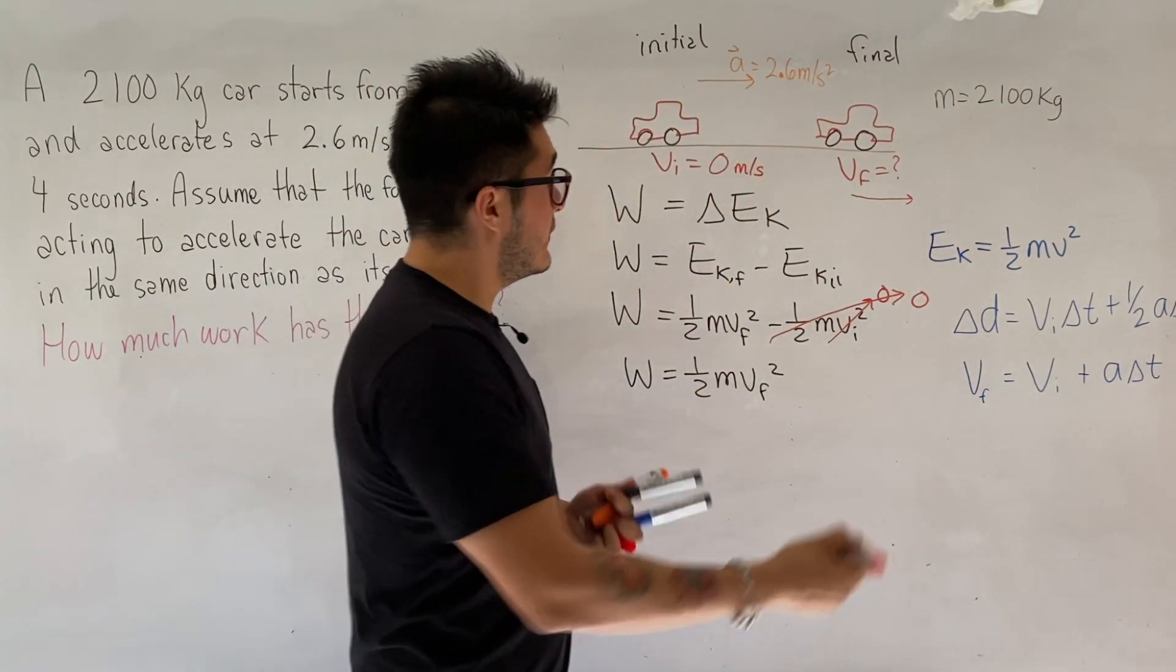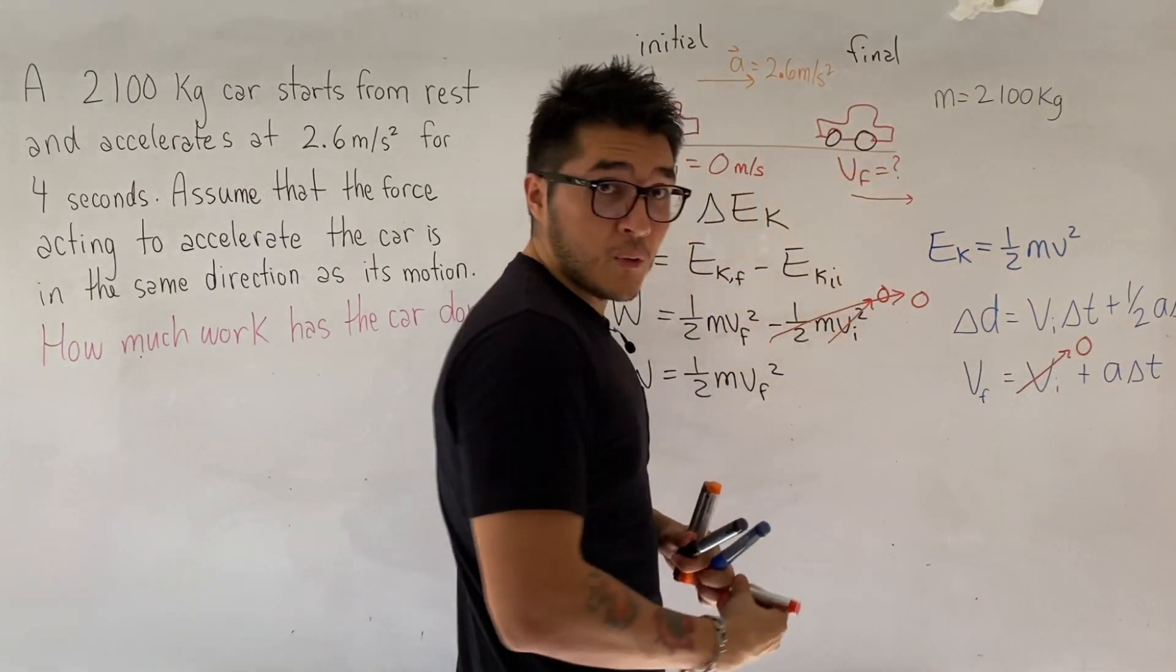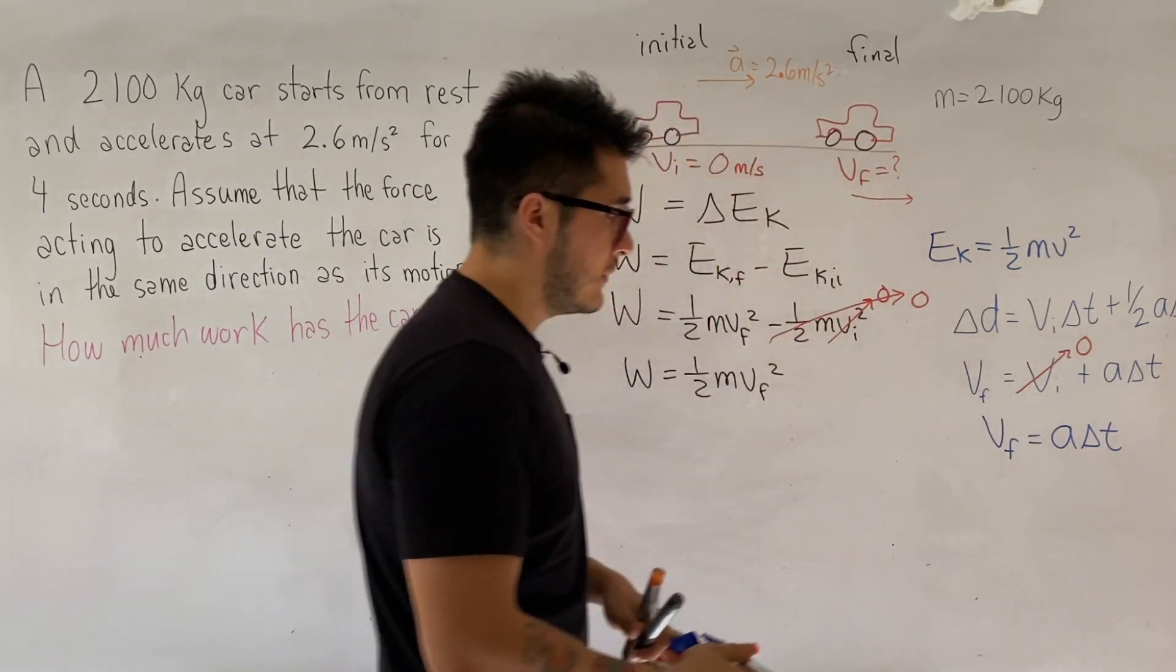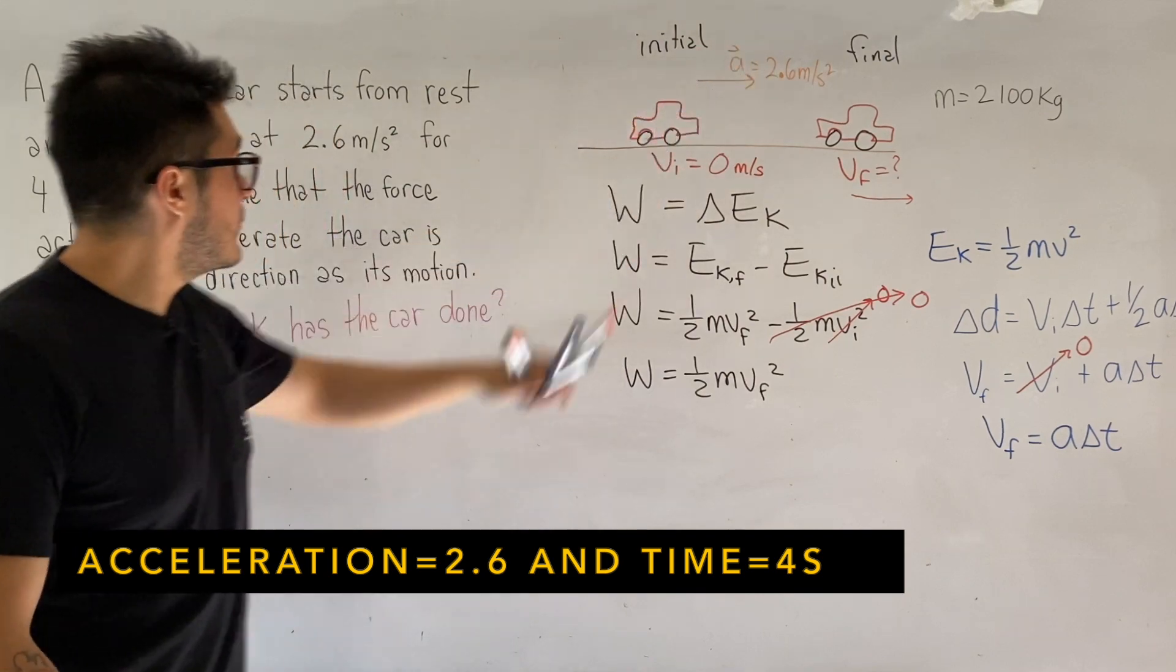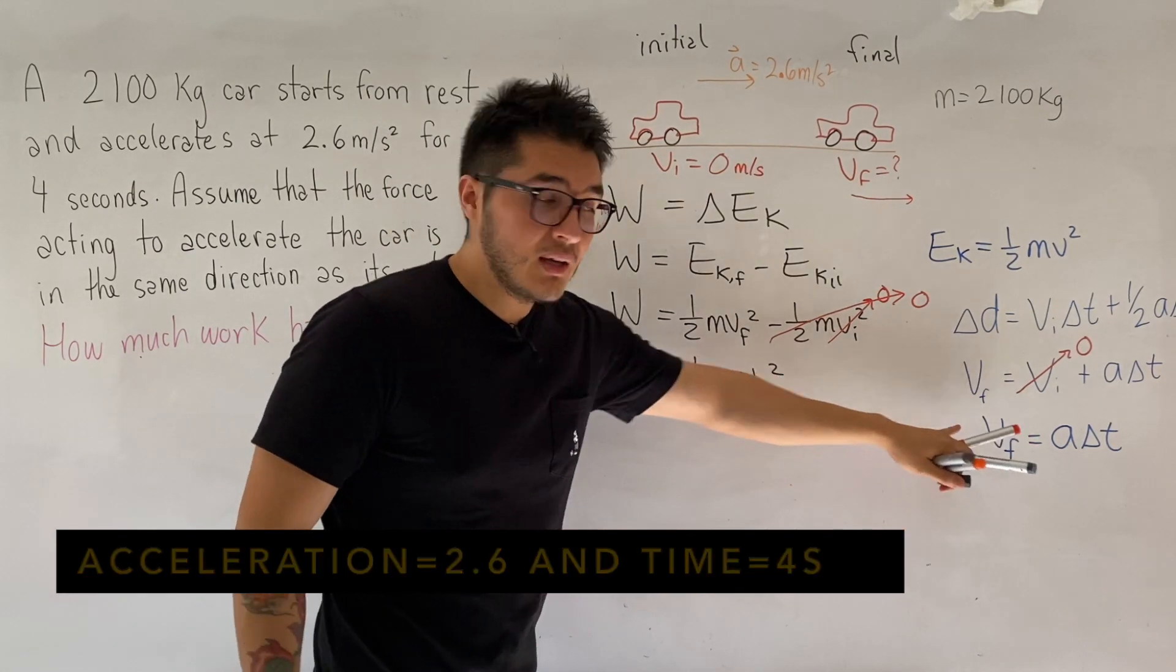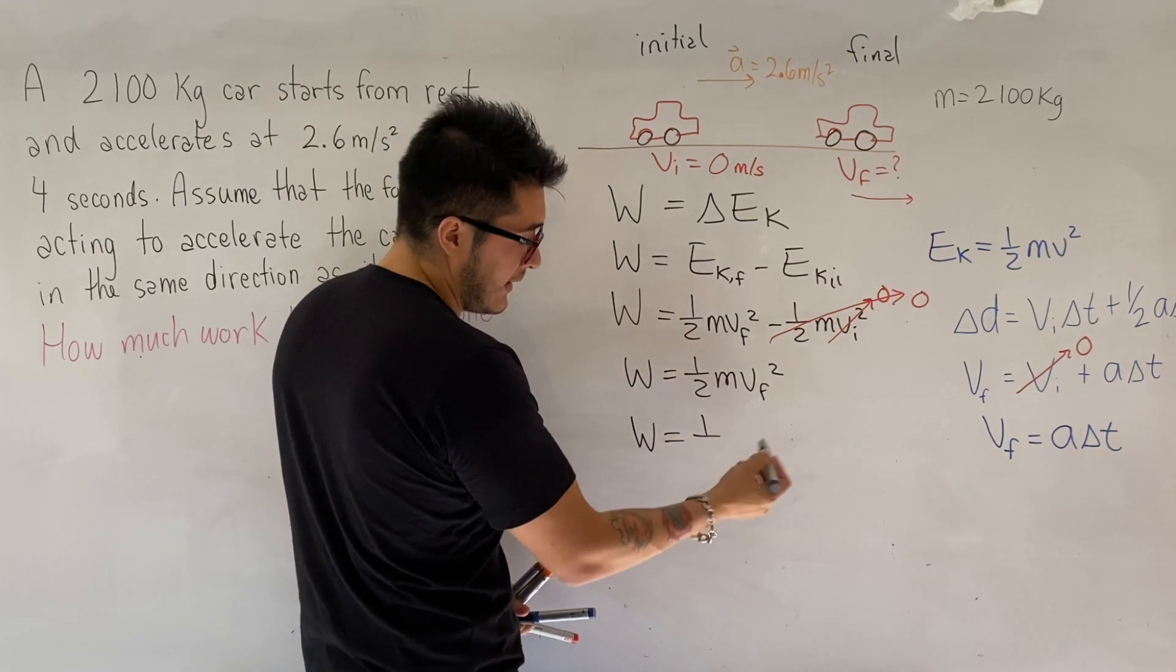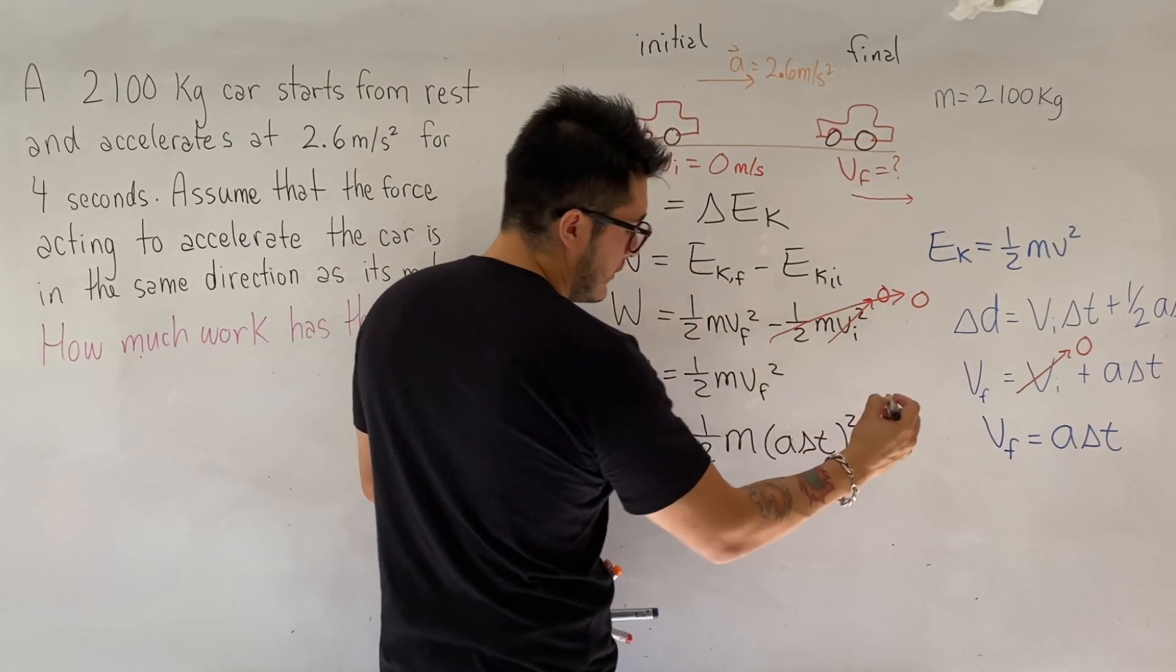So the final velocity equals to the initial velocity plus acceleration times the change in time. In our case, the initial velocity was zero, so we can make this term go to zero and rewrite the equation as the final velocity equals to the acceleration times the change in time. And in this question, they gave us acceleration, and the change in time was four seconds. So let's substitute this new equation into the one that we got stuck previously. So we can find the work done in order to make this car accelerate with that much for that long. a·Δt all squared.